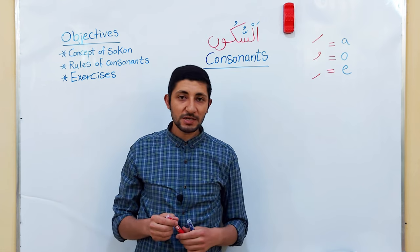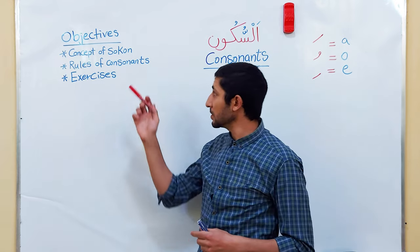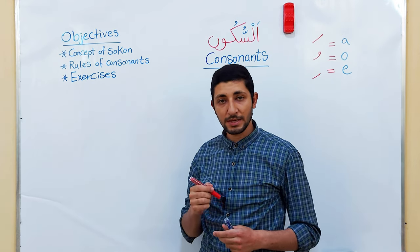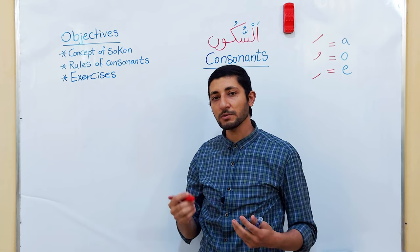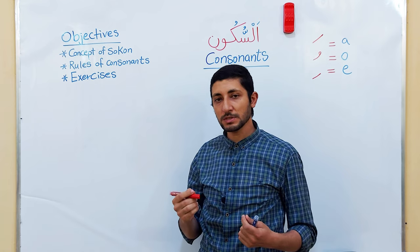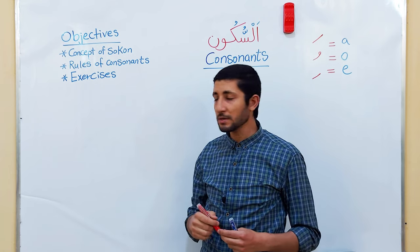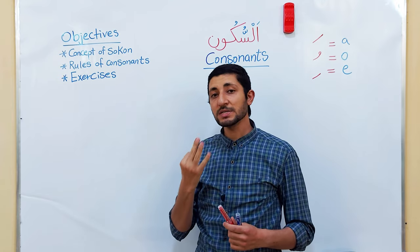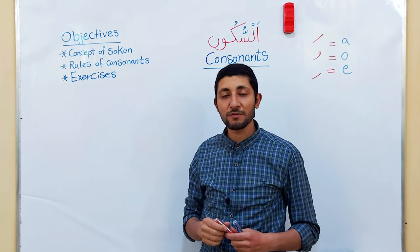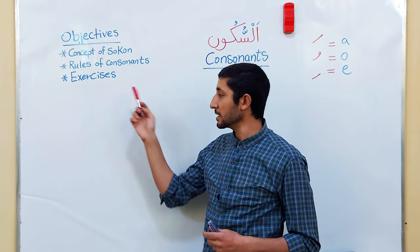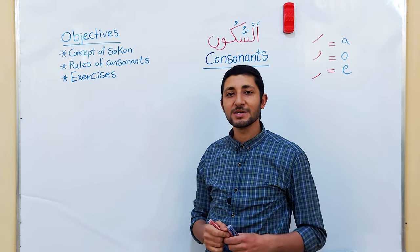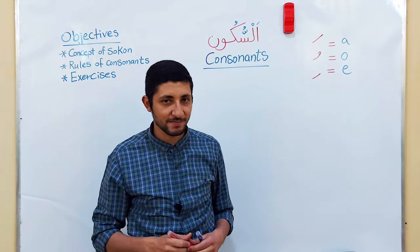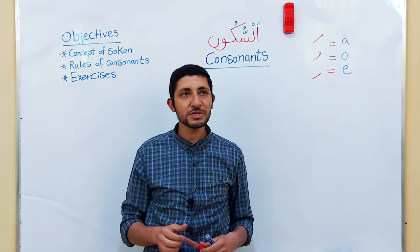The objectives of today's lesson will be: first, the concept of Sukoon or consonants in Arabic. We will introduce how to get the consonant of any letter in Arabic. Second, we will talk about the three basic rules of Arabic consonants. And lastly, we will also give exercises to practice together the same way we did in the previous lesson. Now let's begin.